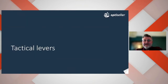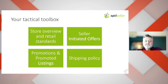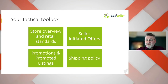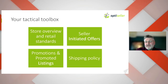Now let's look at what we can do tactically to drive more sales on eBay. When we talk about tactical leaders, we're thinking about what we actually offer to the buyer's purchase experience — what makes our store different to our competitors. There are five key areas to look at to boost your performance: store overview and retail standards, seller-initiated offers, promoted listings, repeated purchases, and shipping policy.